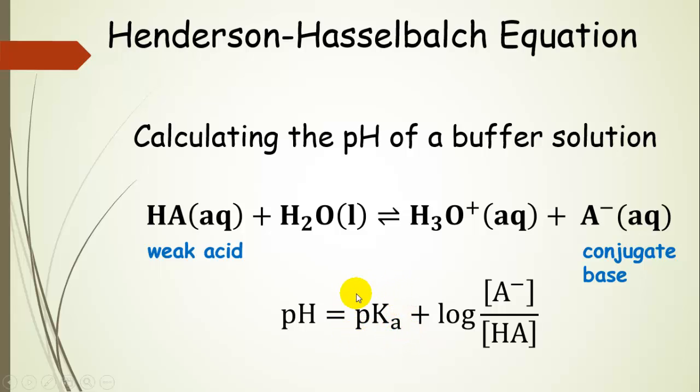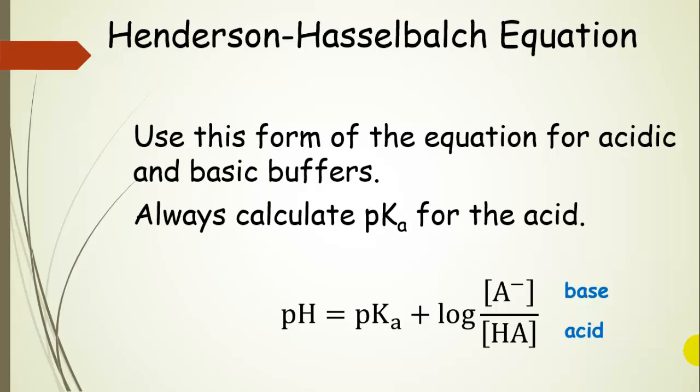So even if it's a basic buffer, you're still going to use the acid form and use the pKa. And then you're going to add on this log term where you've inserted the concentration of the conjugate base and the concentration of the weak acid. And remember, those are going to be approximately equal. And so basically, we're always going to use this equation for acidic and basic buffers. So it doesn't matter which one it is. You're always going to use the pKa for the conjugate acid base pair.